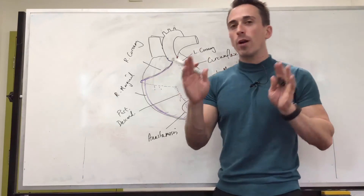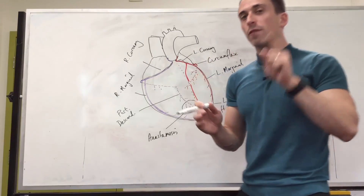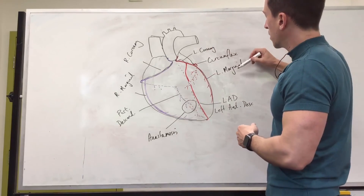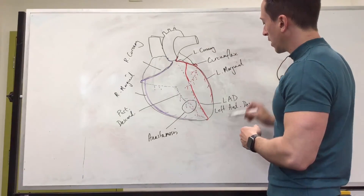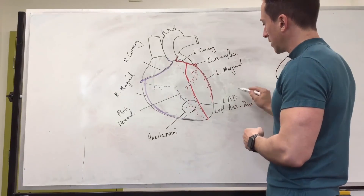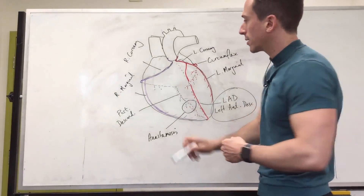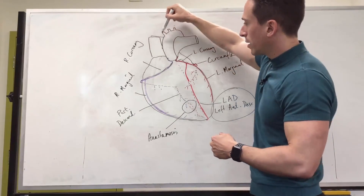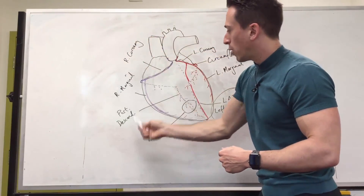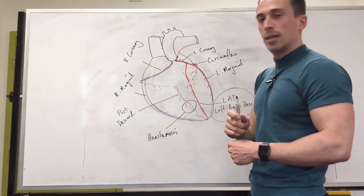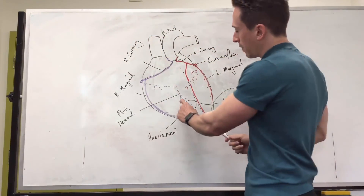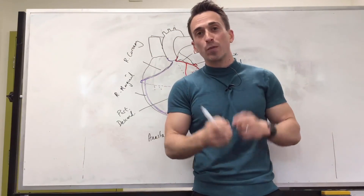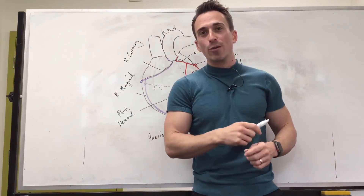So to summarize the coronary arteries: for the left-hand side, you've got the circumflex, the left marginal, and the left anterior descending — the LAD is the most important for heart attacks. For the right coronary artery, you've got the right marginal and the posterior descending, and you may have an anastomosis at the back. That's a quick run-through of the coronary arteries.